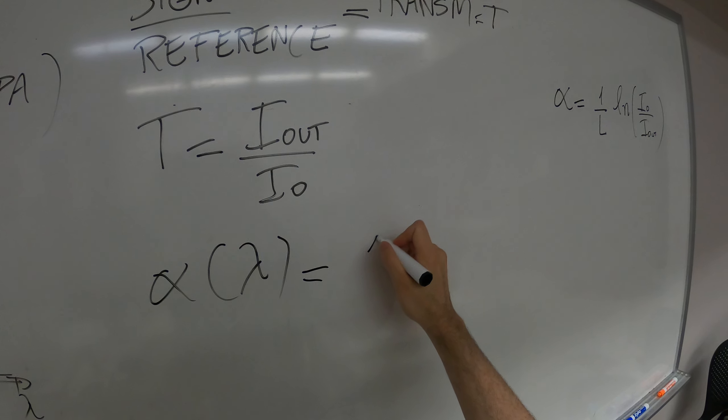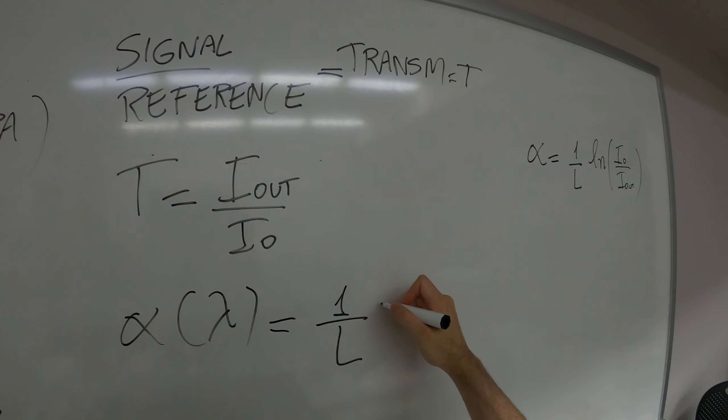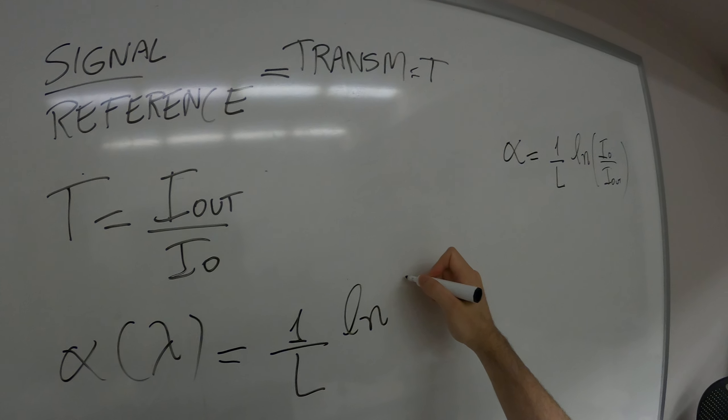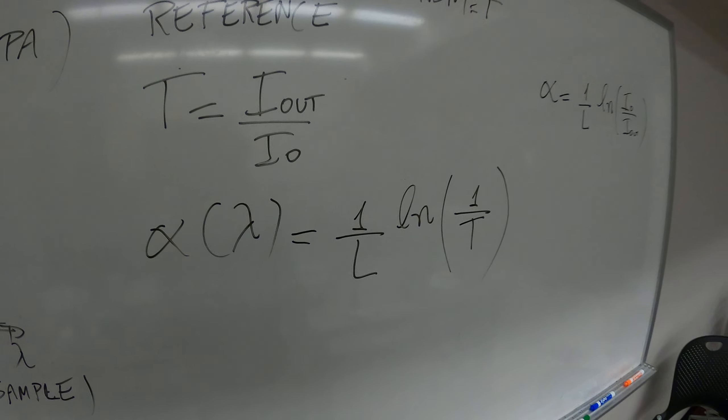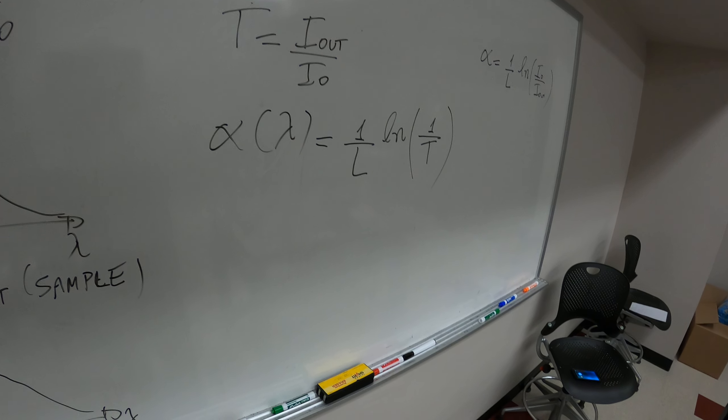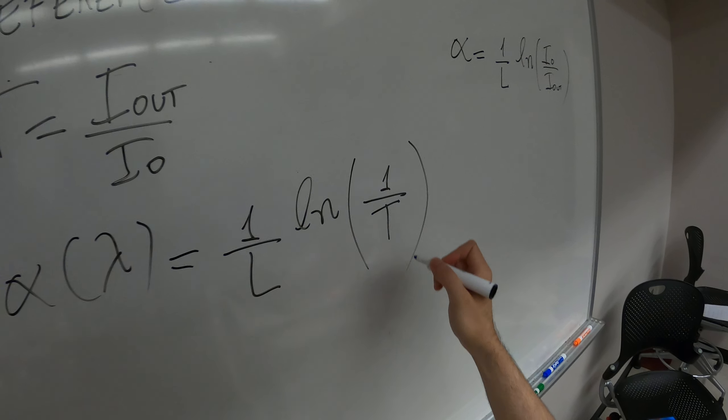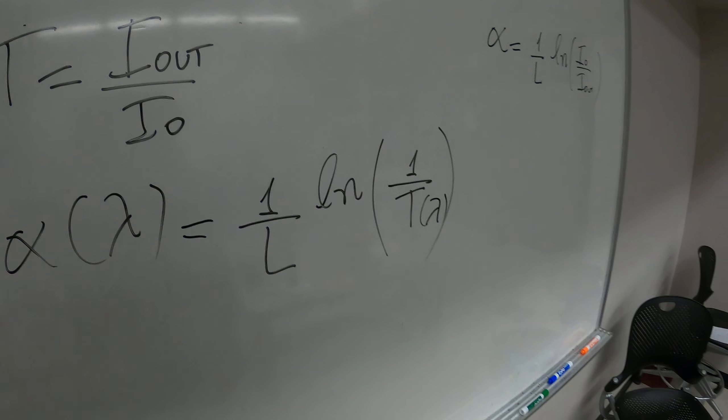This is 1 divided by L, Ln, 1 over T. And T depends on lambda.